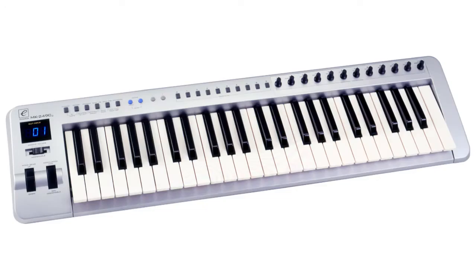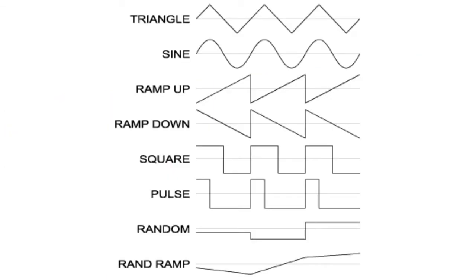Let's start from an oscillator. When we press the key on our keyboard we will hear a single note, and we are hearing the oscillator working. Synthesizers can generate a lot of different waveforms, but the most common are sine, square, triangle, and sawtooth.